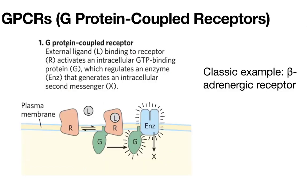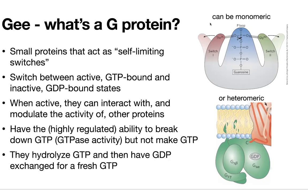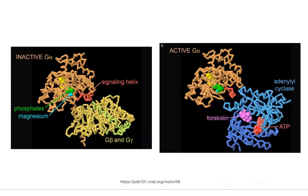We have those GPCRs, where we have the G-protein coupled receptors bound to a heterotrimeric G-protein. The G-alpha subunit is the one that's going to bind to GDP and exchange it for GTP upon response to the primary messenger — the signal relayed through the receptor.